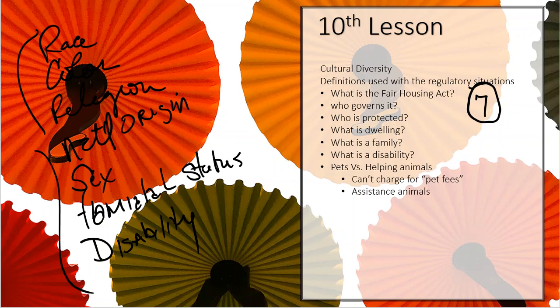There are a couple of key definitions to cover. The first is what constitutes a 'dwelling.' The Fair Housing Act deals with the sale or rental of housing — it does not necessarily cover commercial property, recreational property, or large tracts of farmland. It is specifically a housing law.